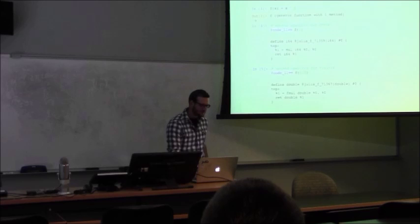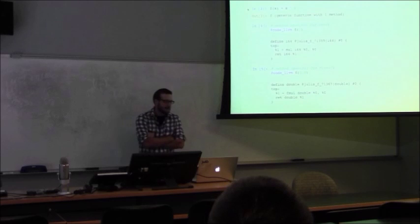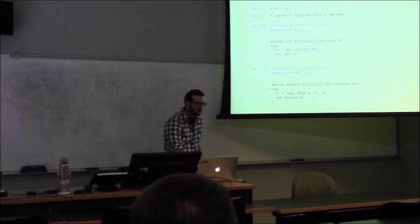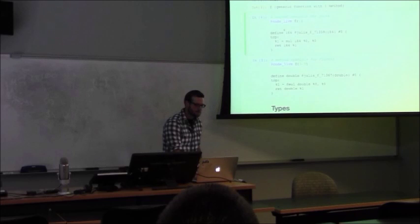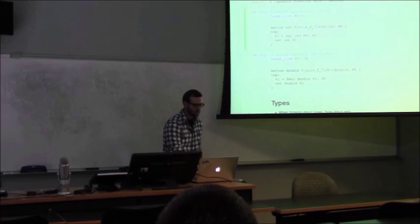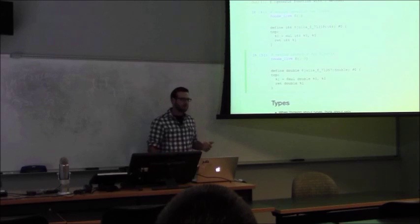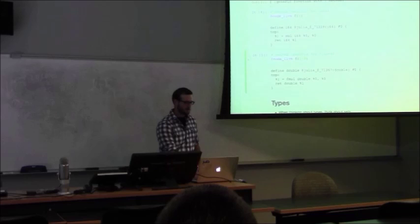Julia is dynamic and compiled — this shows type inference at work. I can write a generic function, just f(x) = x squared, and I'm using a macro called @code_llvm. LLVM is the name of the compiler. A 1 by itself is an integer 64, so when I call f(1), Julia is compiling a method specific for 64-bit integers, whereas calling this function on 1.0 compiles a method specific for doubles or double-precision floating points. I don't have to worry about types unless I want to, because Julia compiles specific versions depending on the types given to these functions.